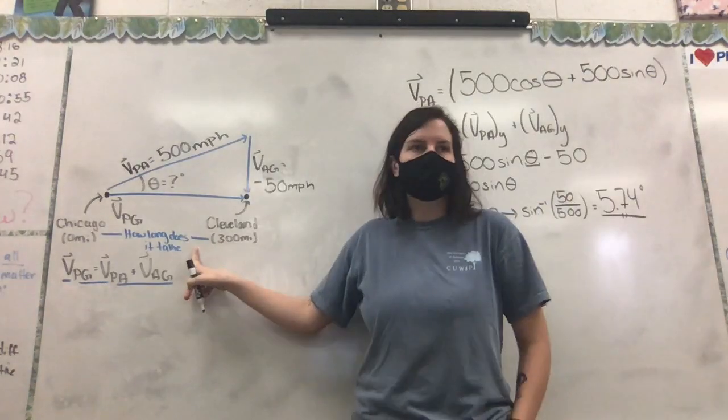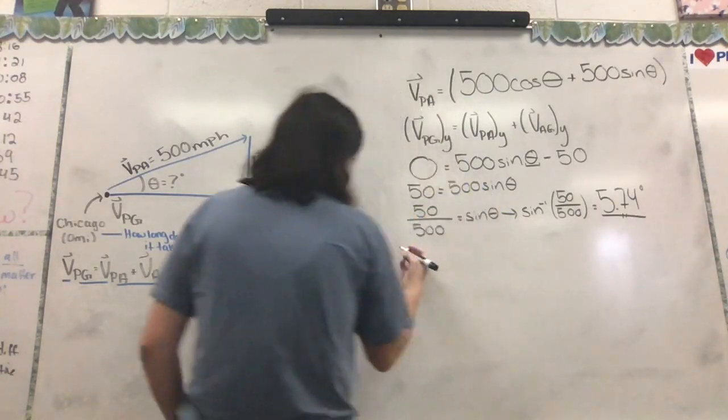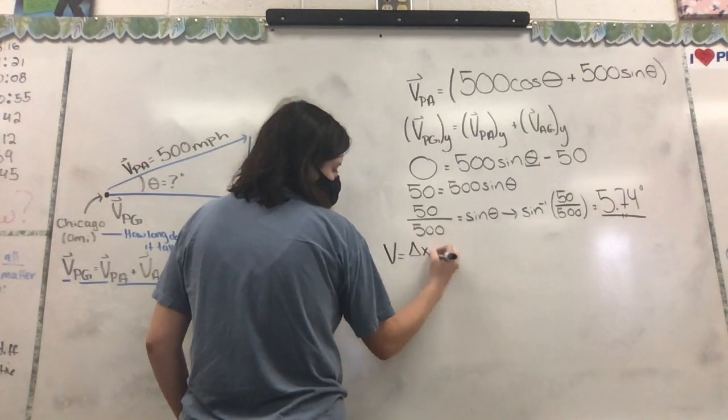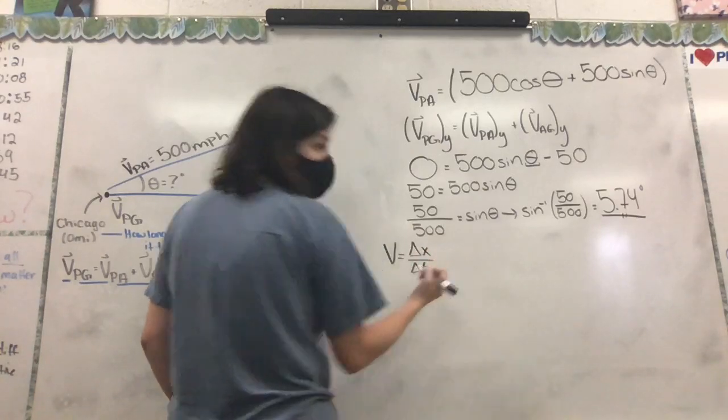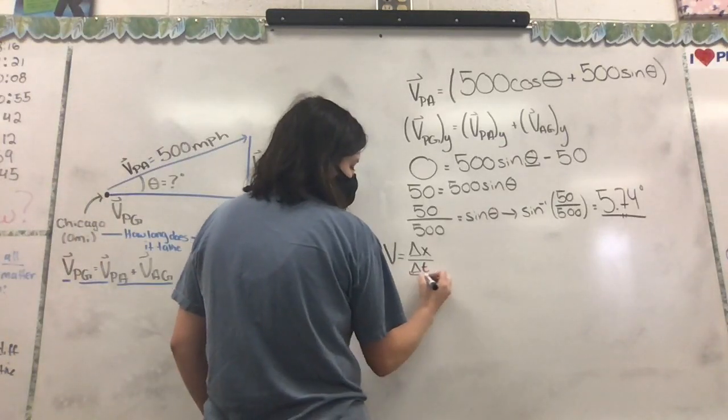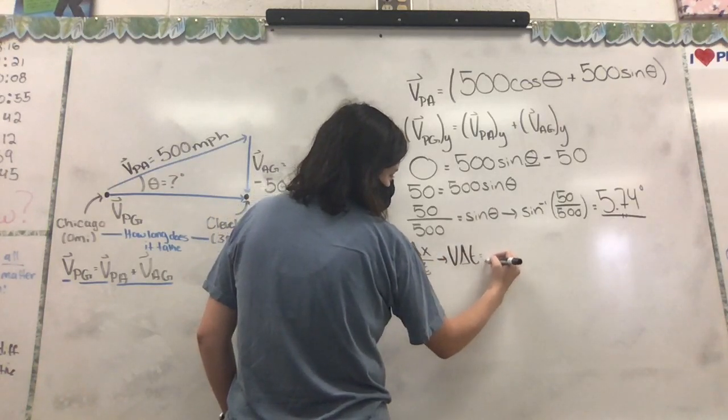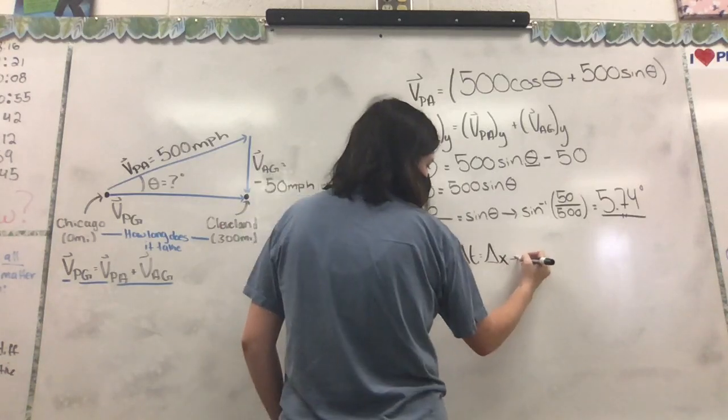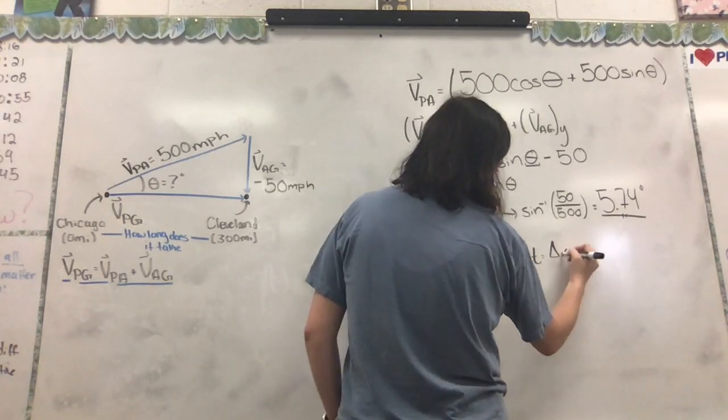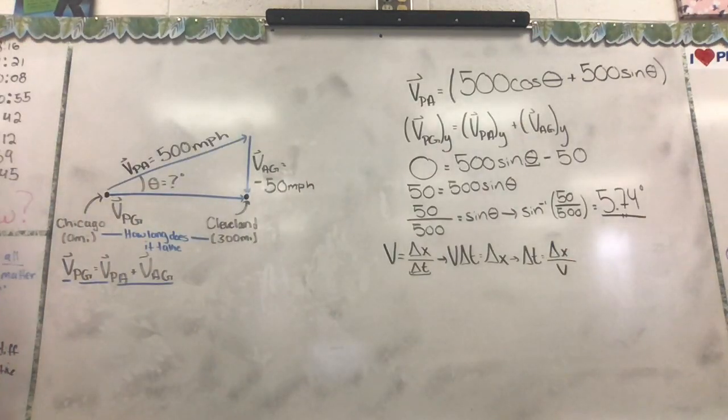What's the one other thing we wanted to find? How long does it take? Who remembers from way back when, when we said that the velocity was equal to displacement over change in time? That was like way back at the beginning. We get to use it again and we're going to use it to solve for time. So if you guys remember correctly, we would multiply the delta T over and then we would end up with delta T equals delta X over V, right? It's an oldie but a goodie as far as equations go.